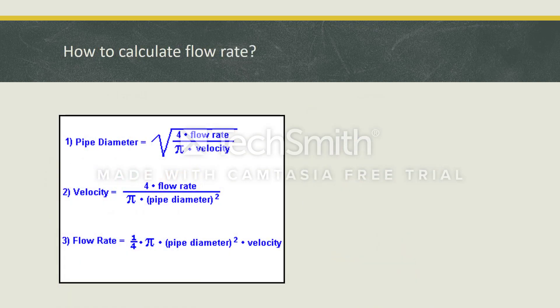Now, how can we calculate the flow rate? Let's assume that fluid flows in a pipe. So firstly we should calculate the pipe diameter. As you can see, square root of 4 times flow rate over pi times velocity gives us pipe diameter. If we know at least two of them, we can calculate the other one.